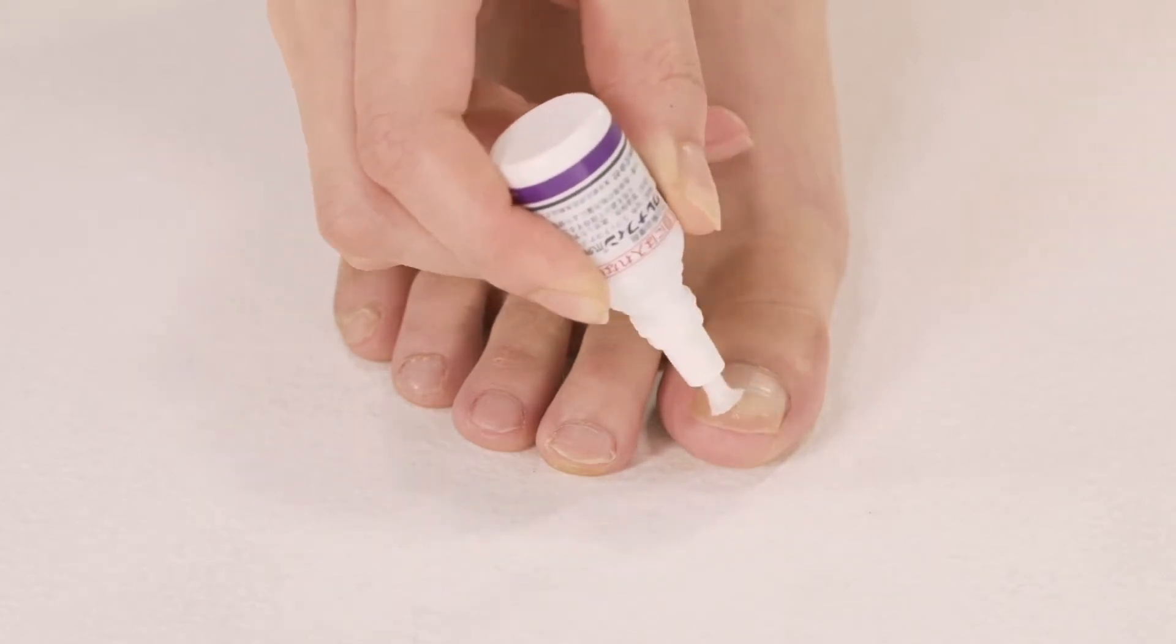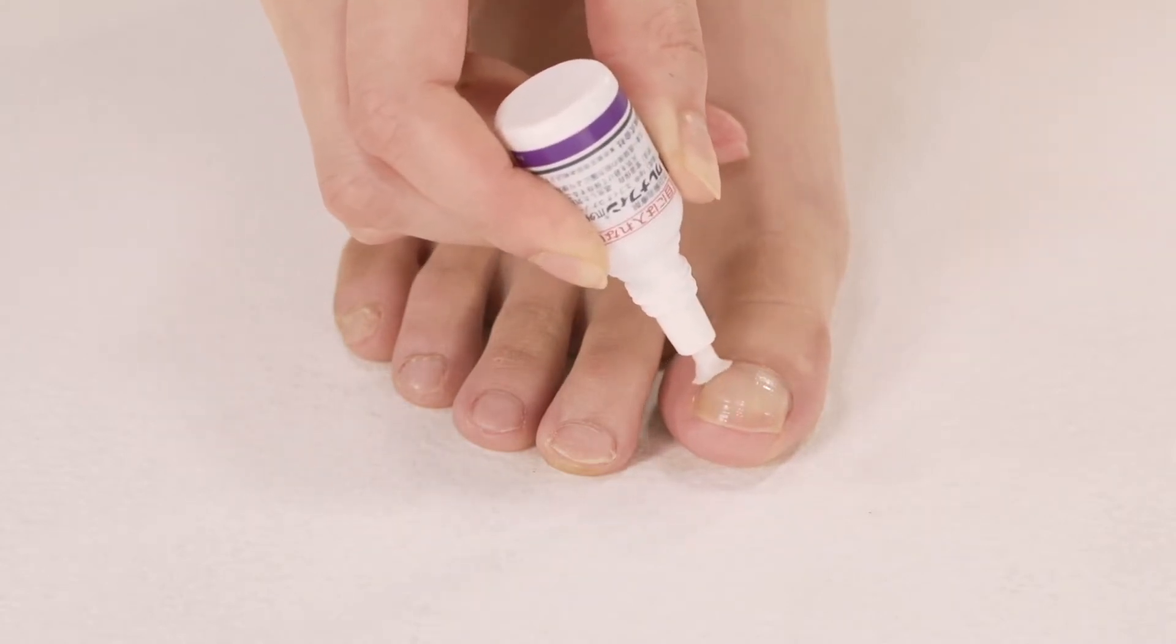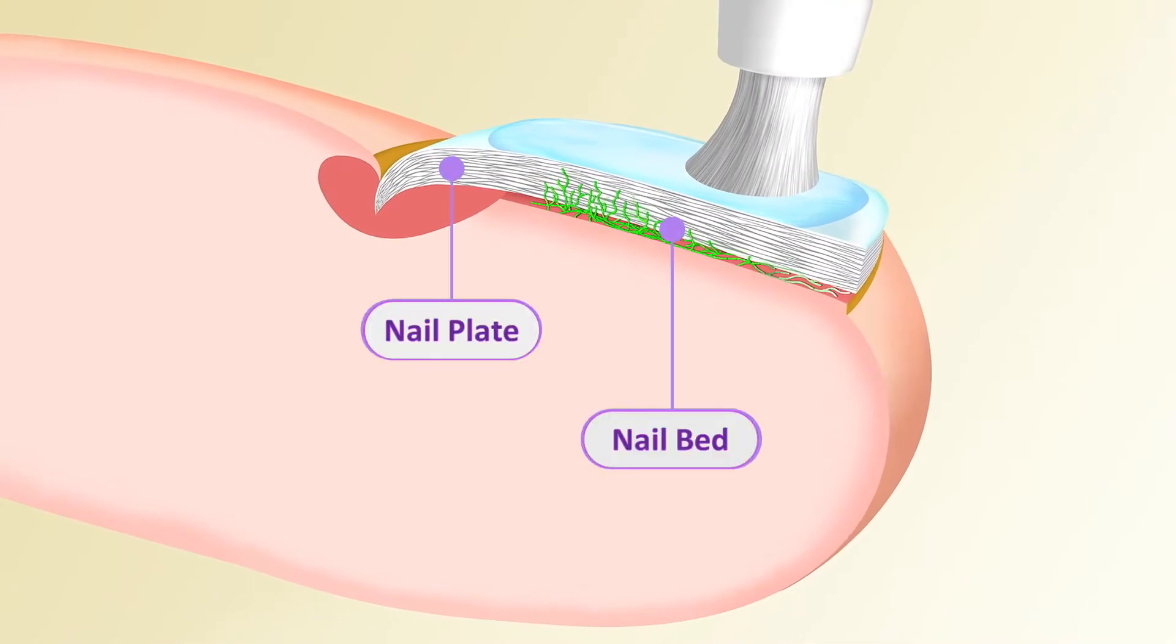Jublia is applied on the surface of the nail with the built-in brush applicator. This is the anatomy of the nail.